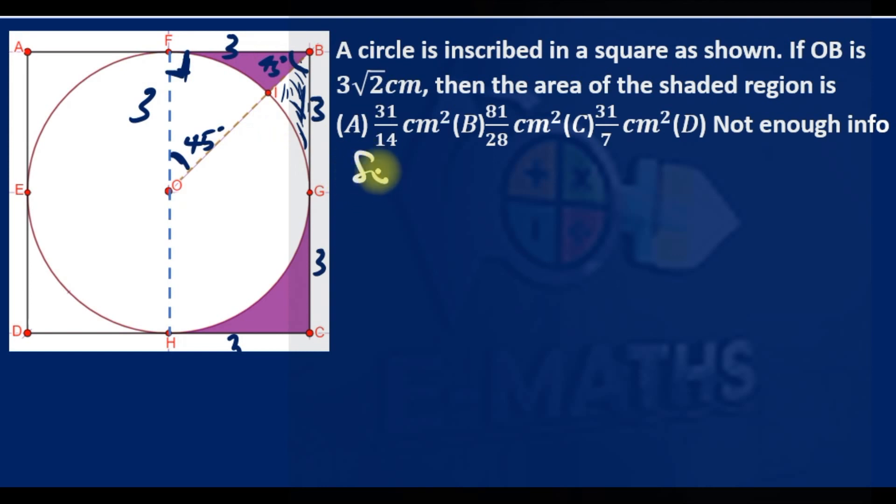Area, therefore... so I'm saying that FB is 3, which is the radius of the circle, by 45-45-90 triangle theorem.